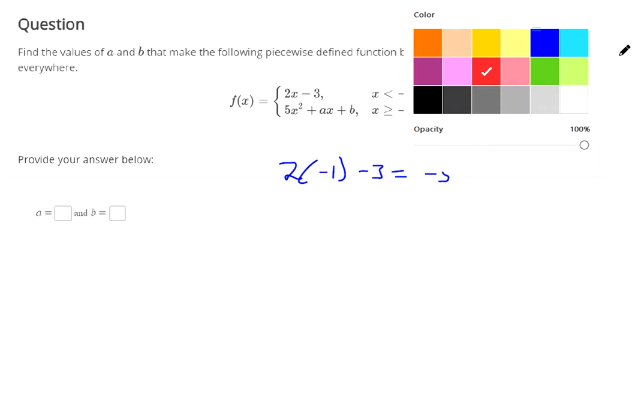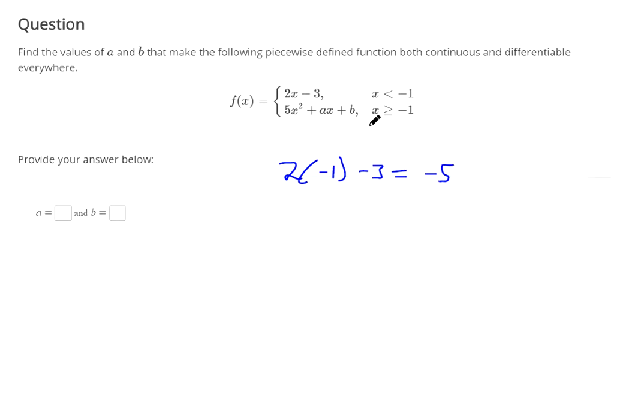And on the right side, plug in negative 1 for the right side. That's going to be 5 minus a plus b. We need that to equal negative 5. This is the left and the right hand limit. We need 5 minus a plus b to equal negative 5.